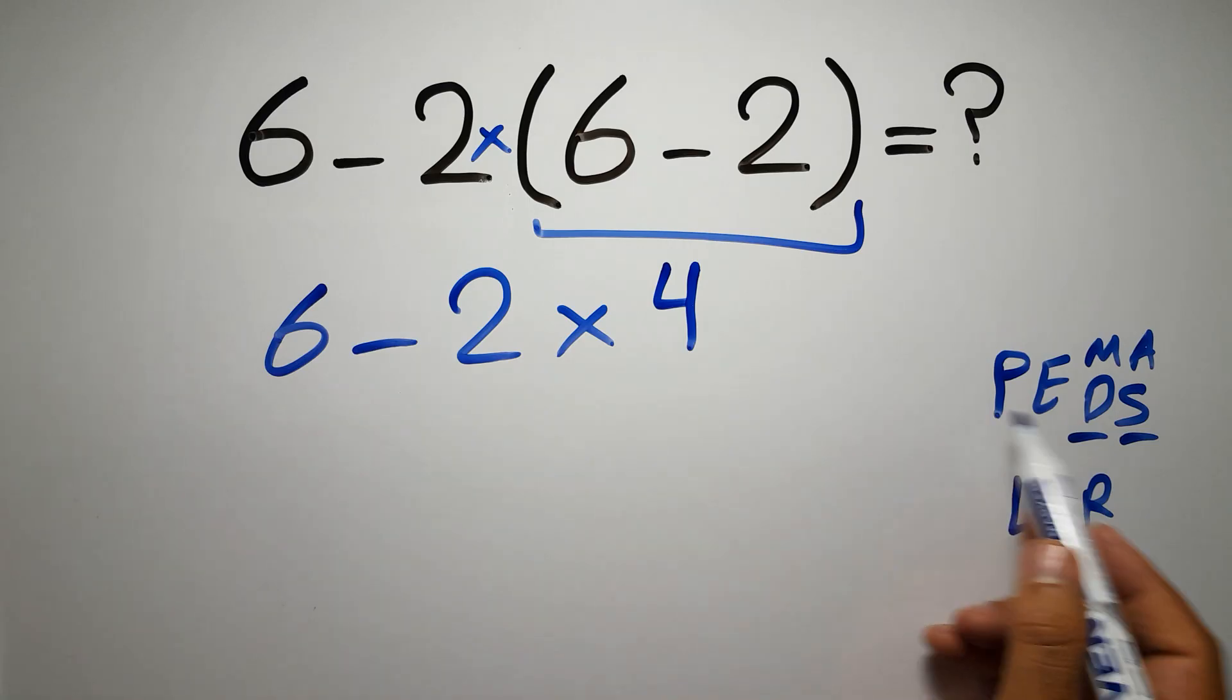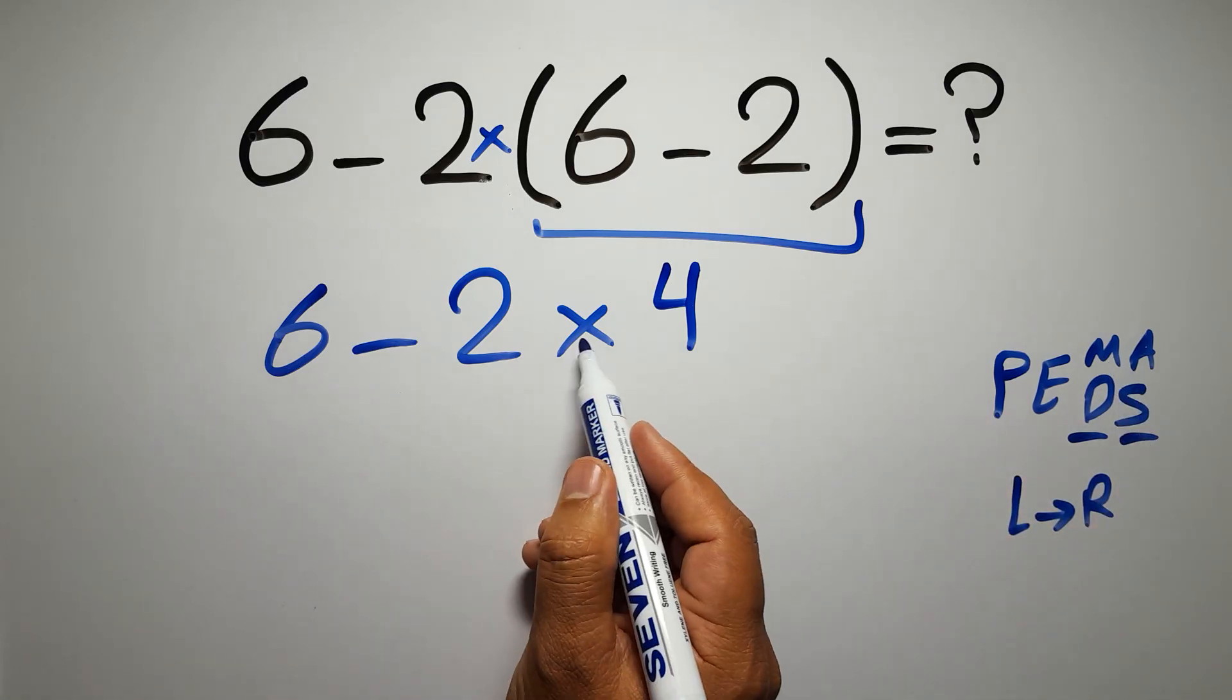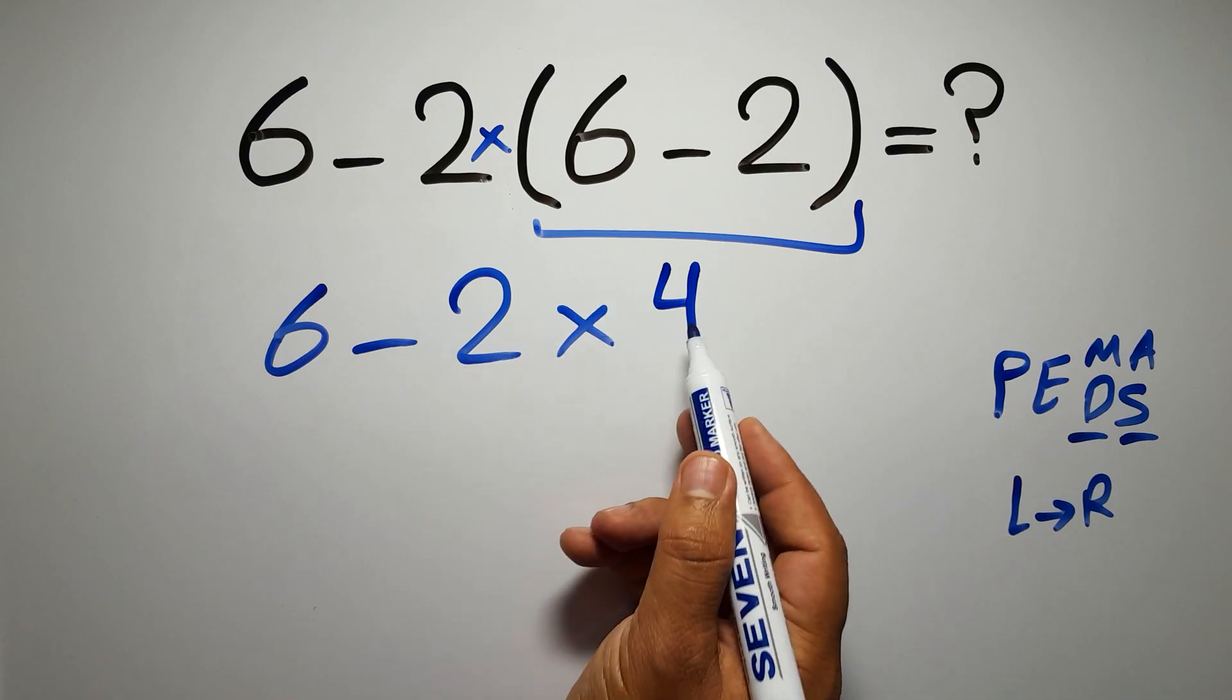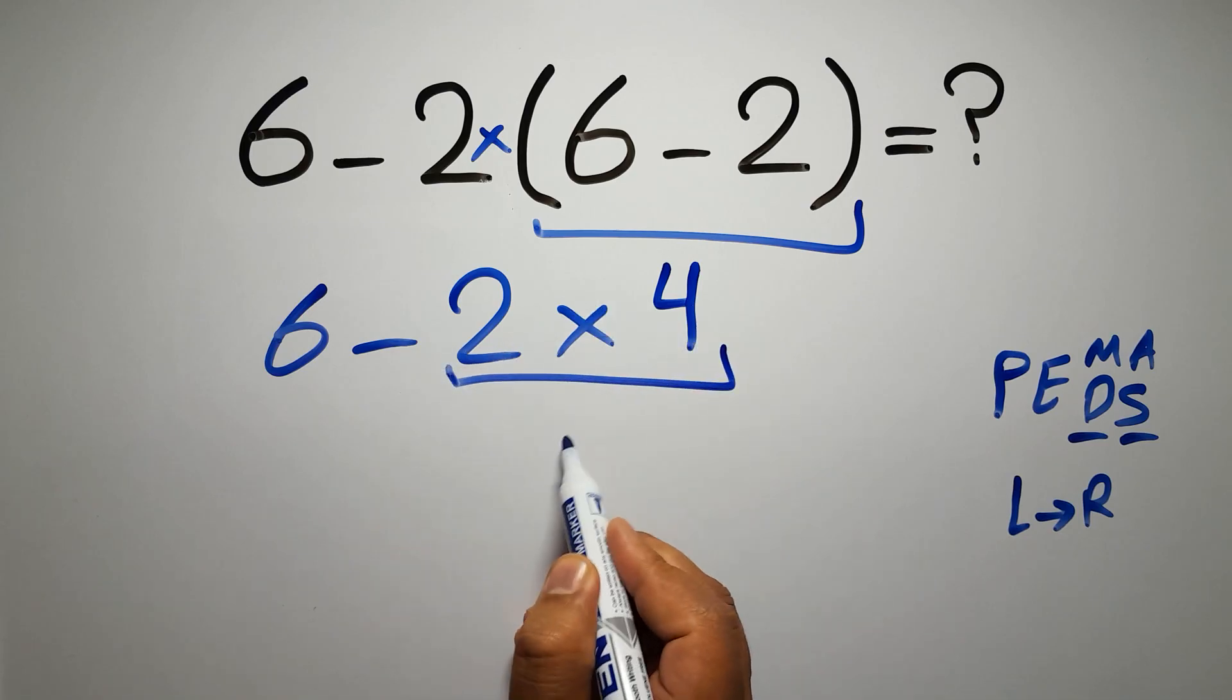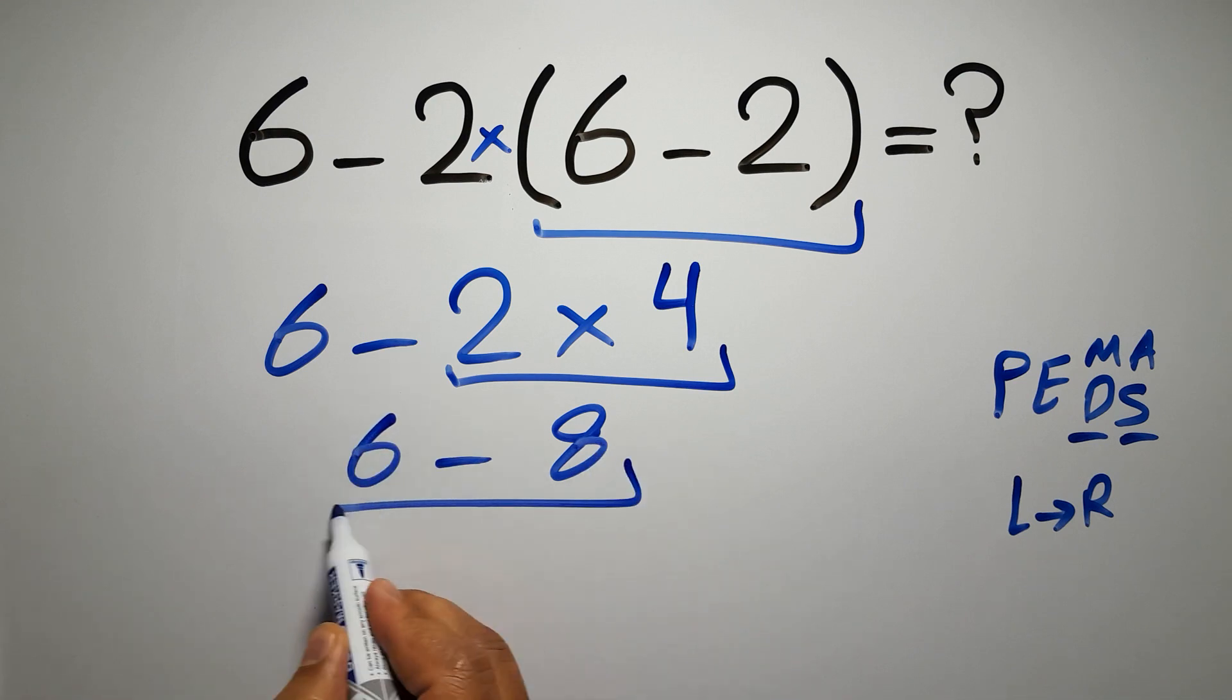Because in PEMDAS multiplication comes before subtraction, so here first we have to do this multiplication: 2 times 4 gives us 8. So 6 minus 8 which equals negative 2, and this is our final answer to this problem.